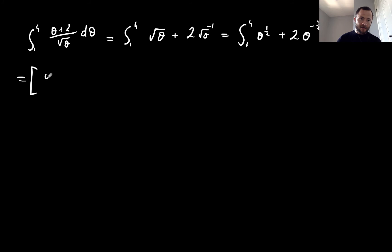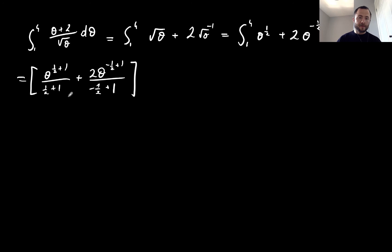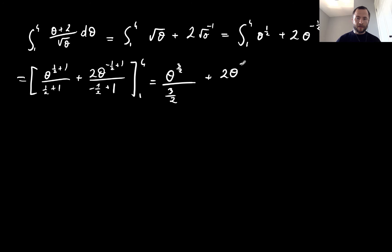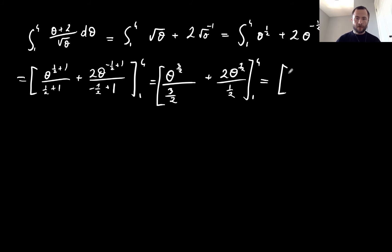Integrating term by term: the first term gives θ^(1/2 + 1) over (1/2 + 1), and the second term gives 2θ^(−1/2 + 1) over (−1/2 + 1), all in square brackets between 1 and 4. Simplifying, that becomes (2/3)θ^(3/2) plus 4θ^(1/2), evaluated between 1 and 4.